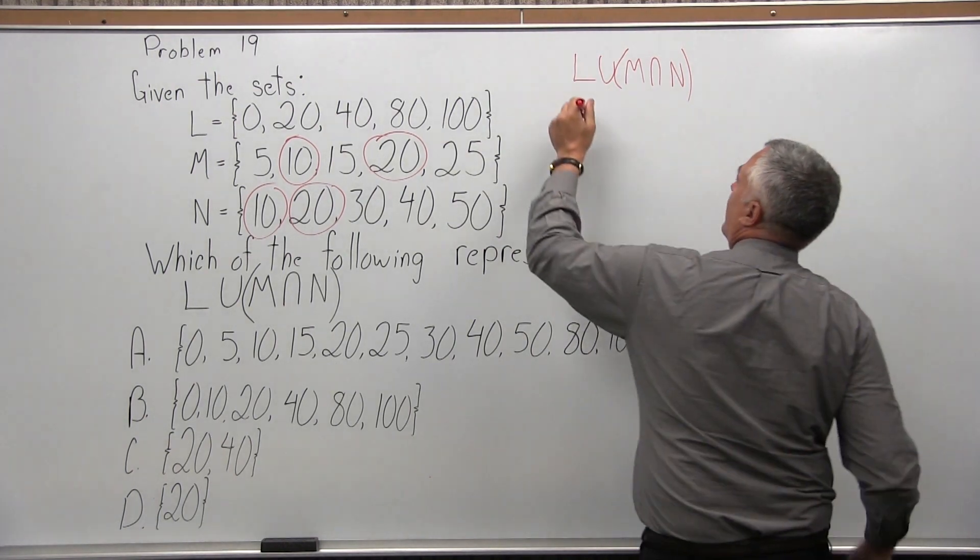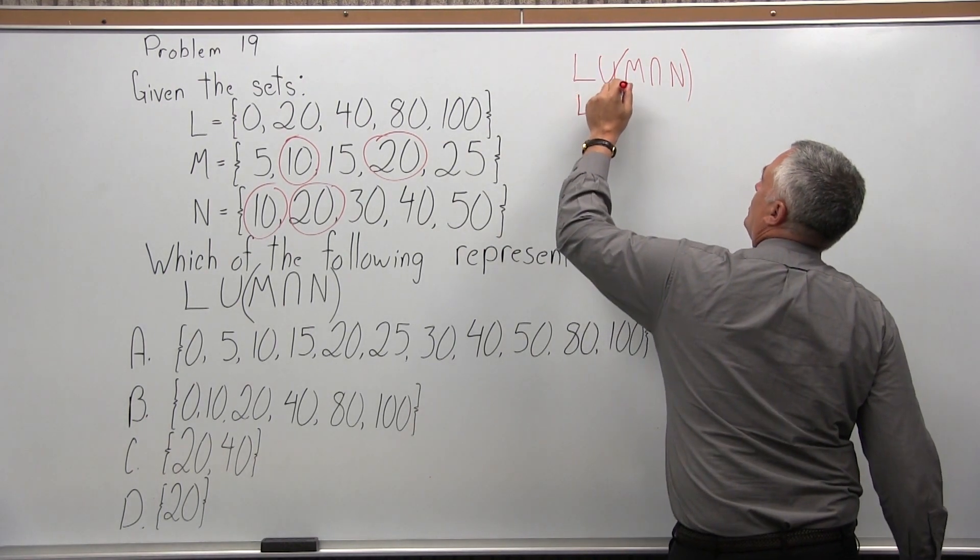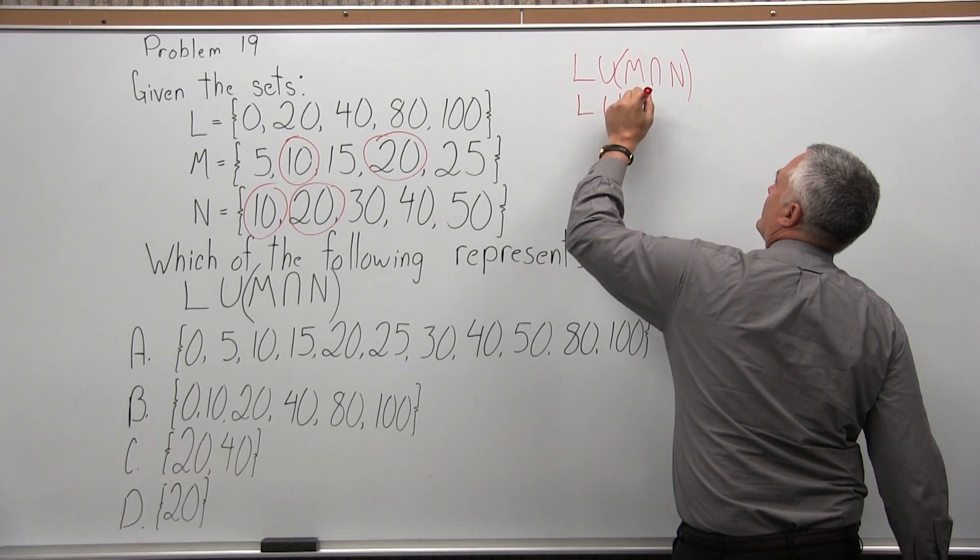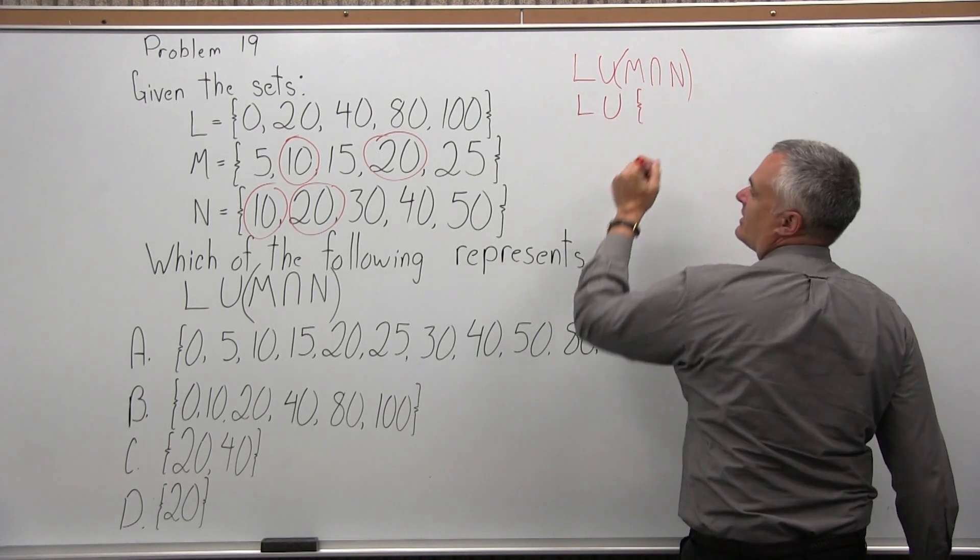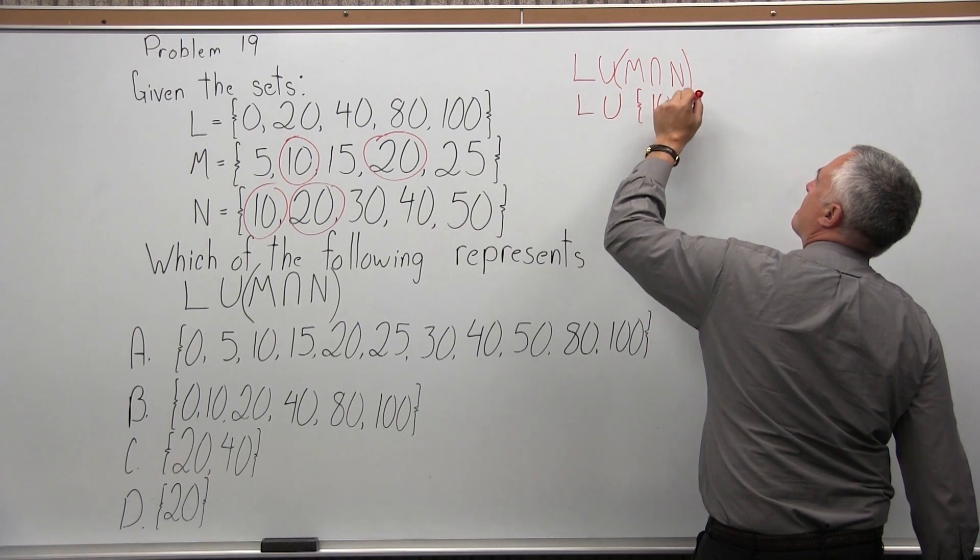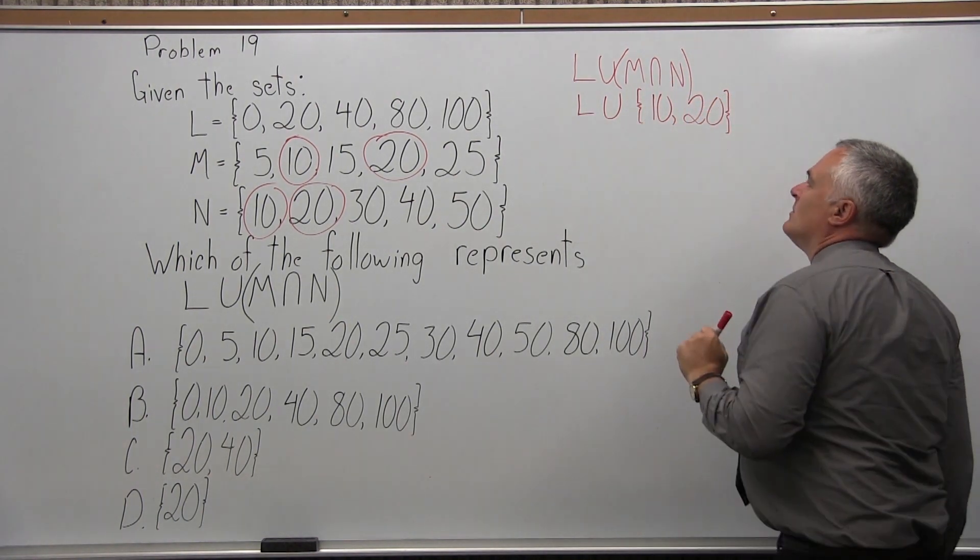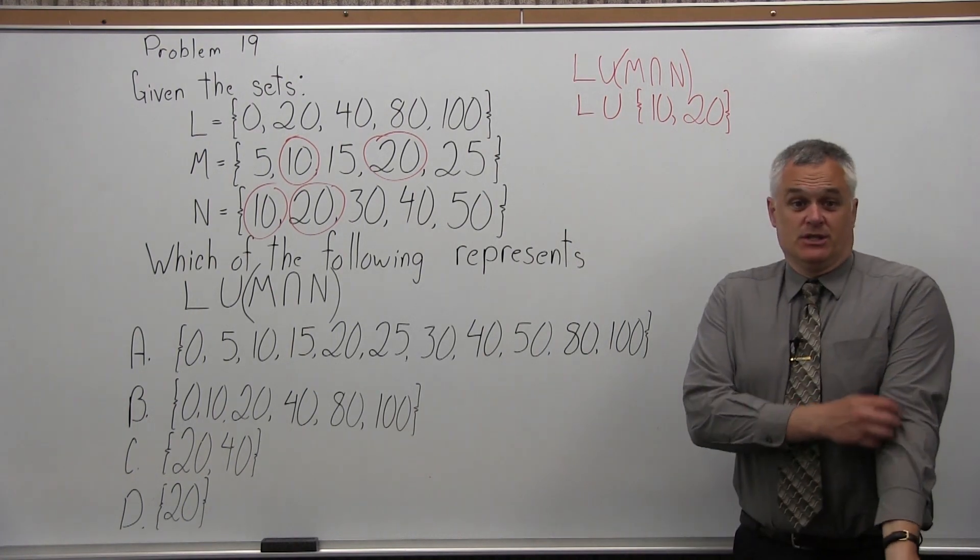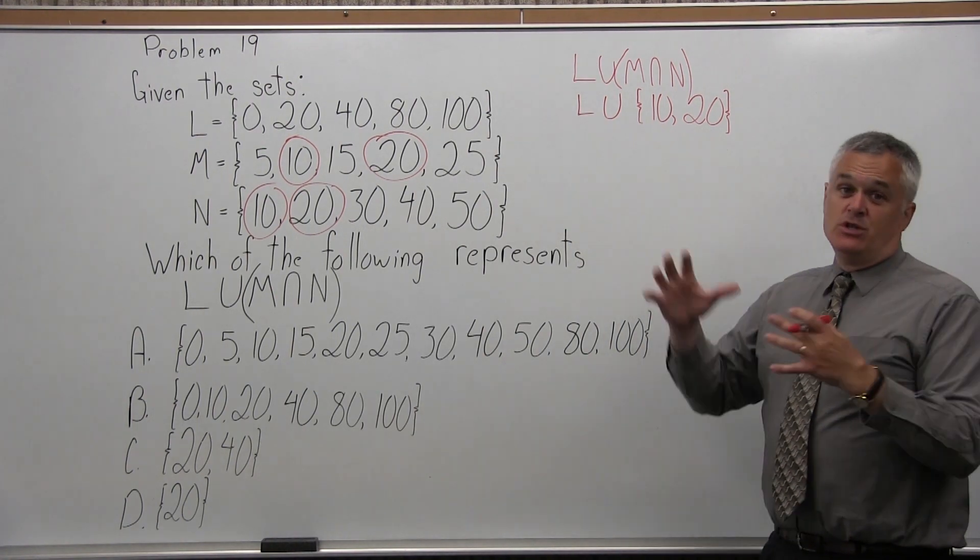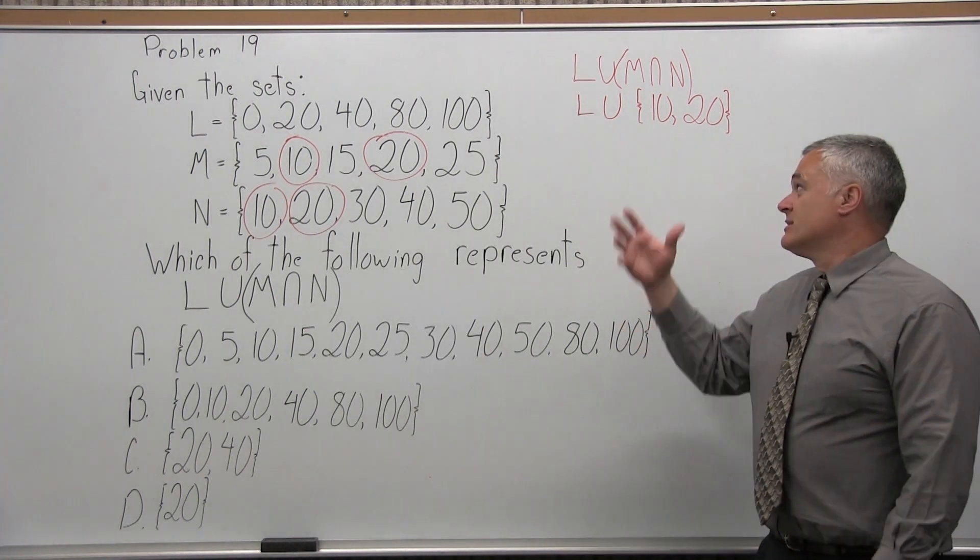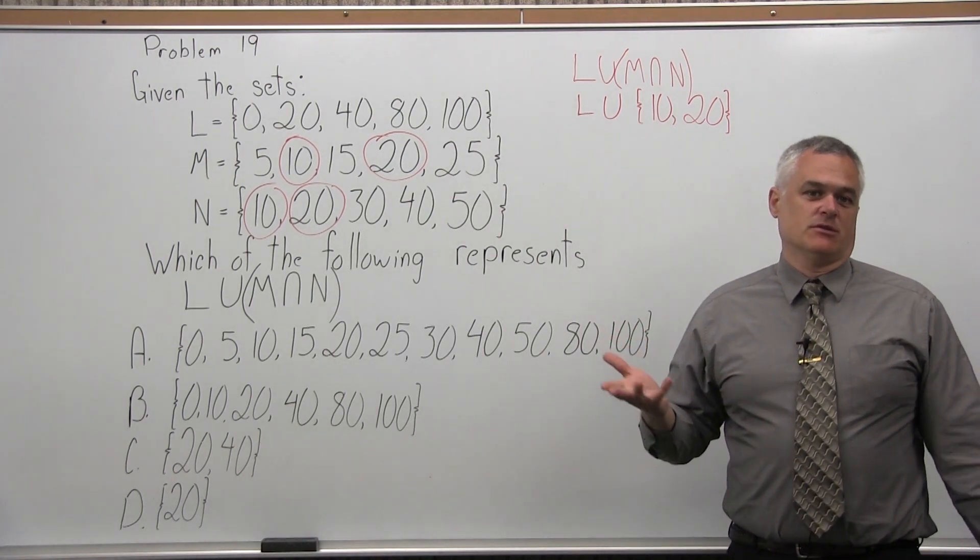So I have L union, and the answer that I got for M intersection N was 10 and 20. Now you have to remember what union is. Union means the union of the two sets. Join them together. Anything that's listed twice, only list it once when you write it out.